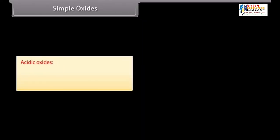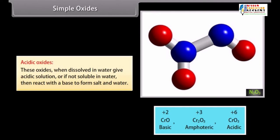Acidic oxides. These oxides, when dissolved in water, give acidic solution or if not soluble in water, then react with a base to form salt in water. For example, SO2, N2O3, P2O3 and Br2O. The acidity of the oxide increases as the oxidation number increases.